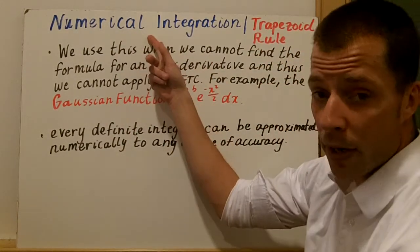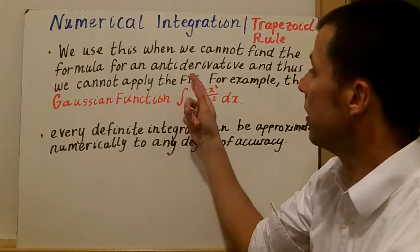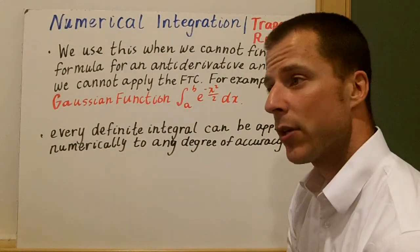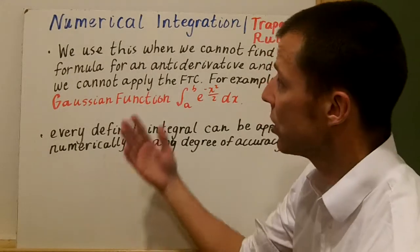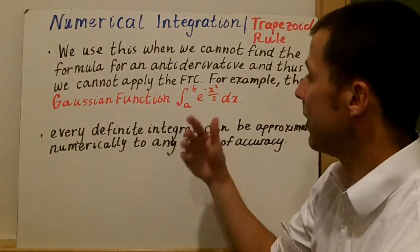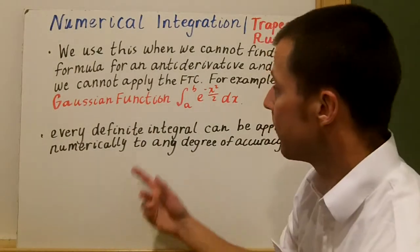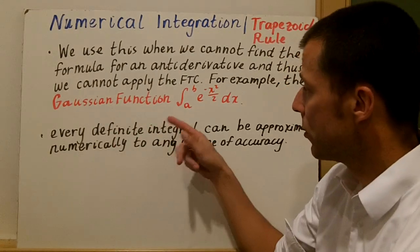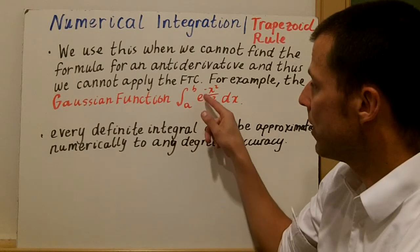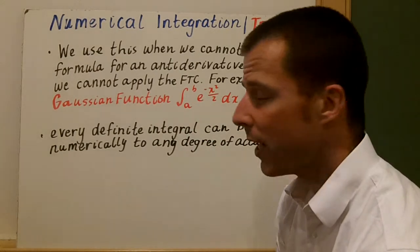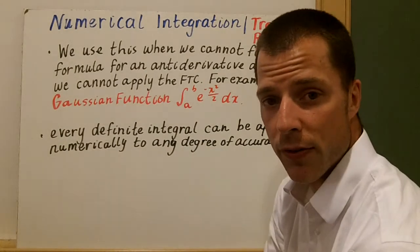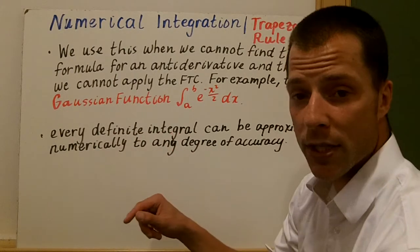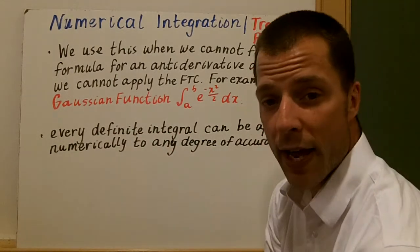We use numerical integration when we cannot find the formula for the anti-derivative and therefore can't apply the fundamental theorem of calculus. So when we have an integral we can't integrate, we can use numerical integration to estimate that area. An example where we can't find the anti-derivative easily is the Gaussian function: the integral from a to b of e to the negative x squared over 2 dx.